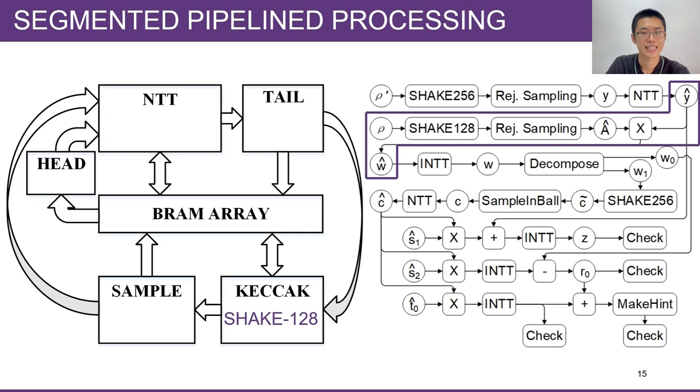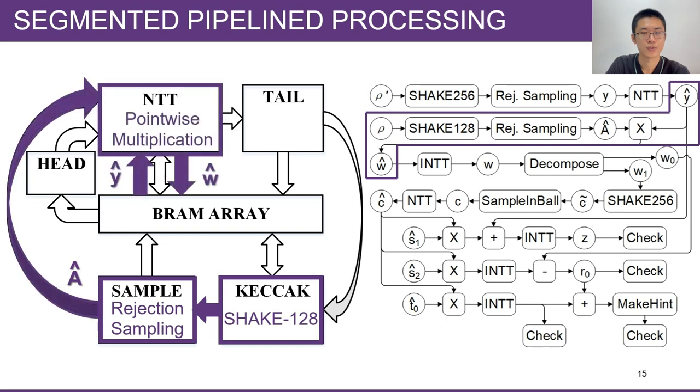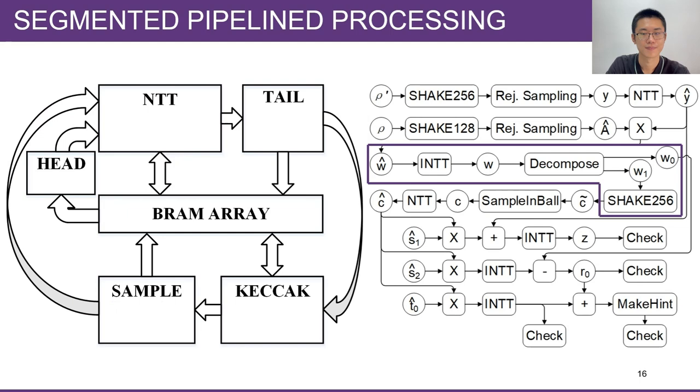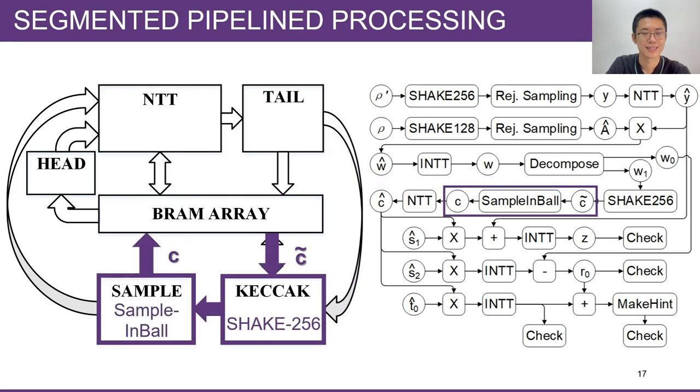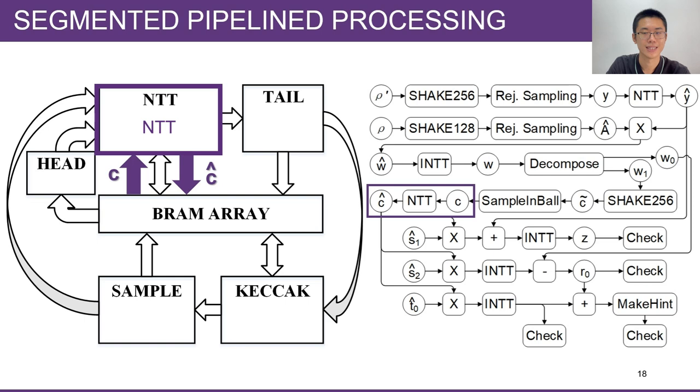In the second segment, we use Keccak and Sample module to generate the matrix A on the fly, and use the NTT module to perform four-way parallel pointwise multiplication. In the third segment, the NTT module performs iNTT on w-hat and outputs w. Then the TAIL module performs the Decompose function on w. The lower part w0 is stored into the BRAM, and the higher part w1 is absorbed by the Keccak module to prepare for calculating c tilde. The c tilde is used to generate the pseudo-random number for the shuffle function SampleInBall. Then the NTT module performs NTT on polynomial c to prepare for the following three multiplications.